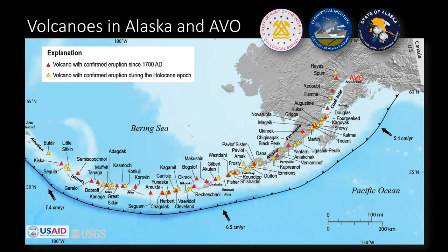I'm mostly going to focus on Alaska. This is a map of all the volcanoes with confirmed eruptions since the 1700s — those are the red triangles — and Holocene volcanoes in yellow. It's about 60 to 65 volcanoes that span about 1,500 kilometers along the arc. A lot of these are islands that are remote, and AVO is up in Anchorage, so this is really remote monitoring for most of these volcanoes.